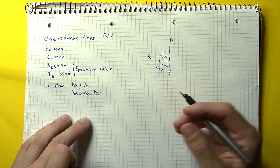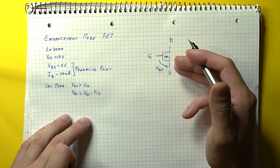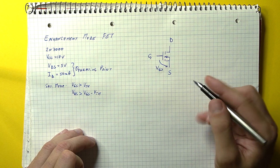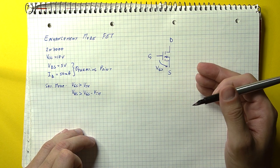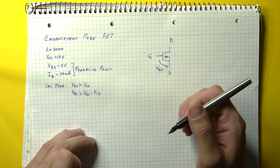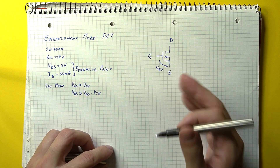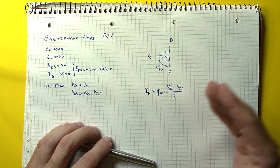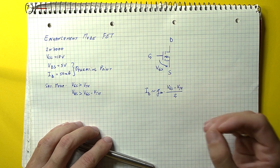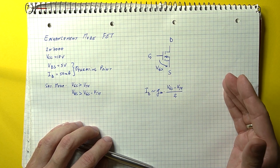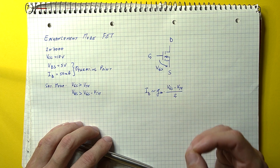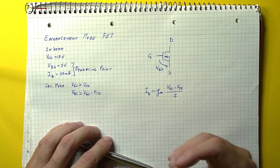Saturation mode is ensured when the gate-source voltage is larger than the threshold voltage and the drain-source voltage is larger than the difference between the gate-source and threshold voltage. In most field effect transistors the gate current is negligible — something in the nano to microamp region — so the only thing we need to do is set the gate-source voltage. Since we can't rely on a predictable current like with bipolar transistors, we use a resistor divider. Rather than calculating the gate-source voltage from equations with uncertain parameters, I'll extract it from the simulation model.